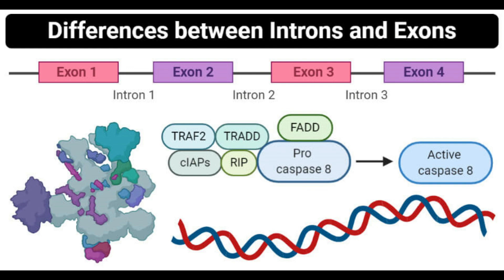By alternative splicing: introns are removed by alternative splicing, whereas more exons are connected after alternative splicing. By novel gene formation: introns might result in novel genes as the short non-coding regions might evolve into real functional genes through a continuous evolutionary process, while exons might combine in different configurations forming different sequences that code for different proteins.